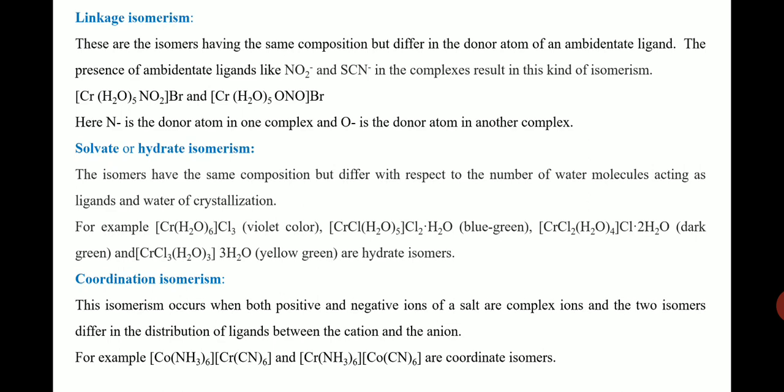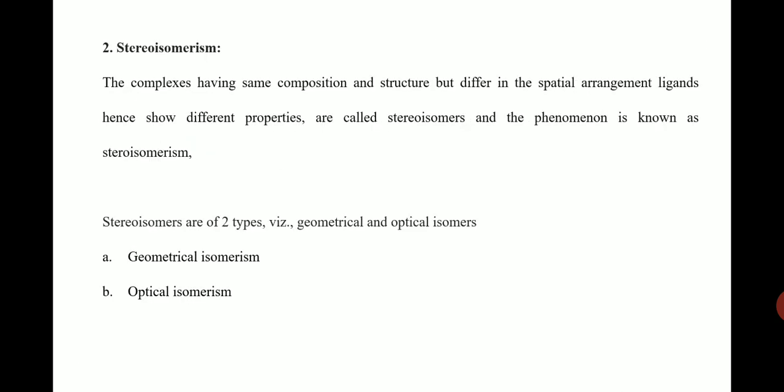Solvate isomerism refers to the number of water molecules directly coordinated to the central metal atom — that is the key difference. Coming to coordination isomerism, this involves complexes containing a complex anion and a complex cation; these are referred to as coordination isomers.